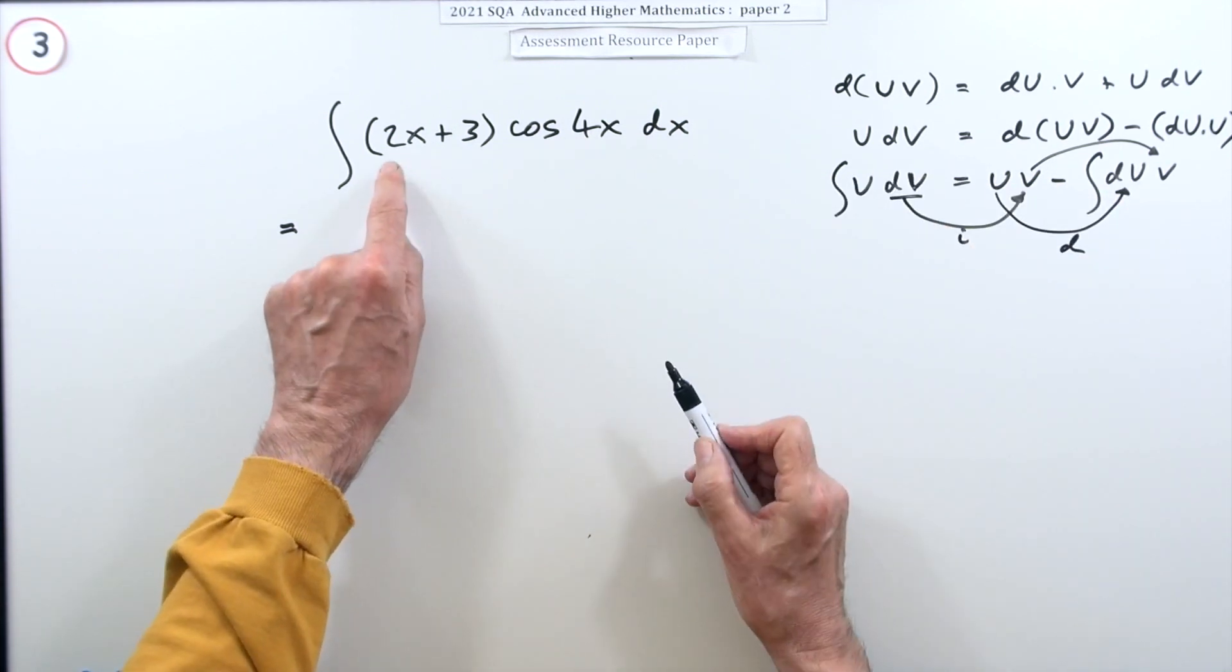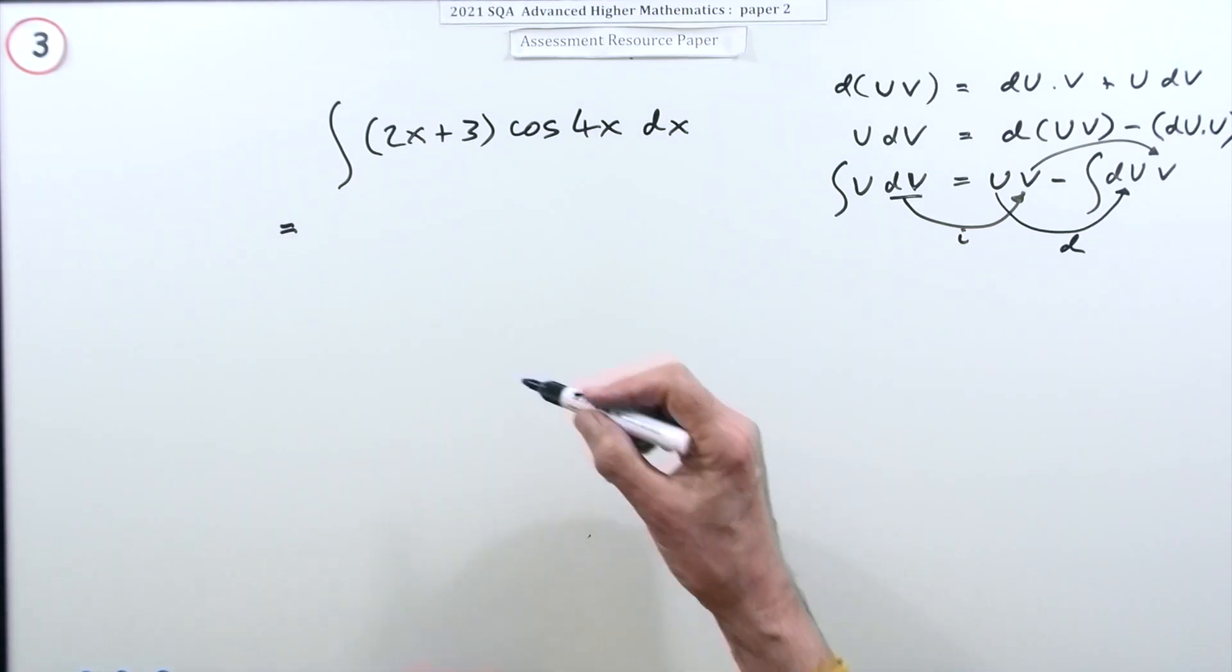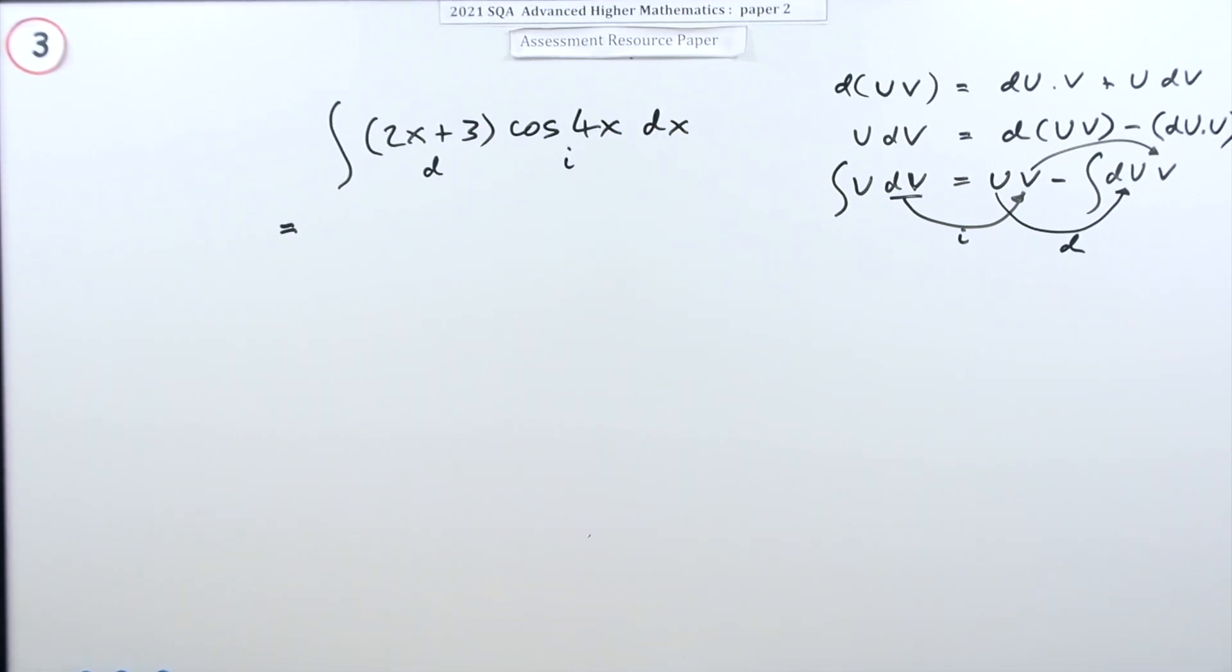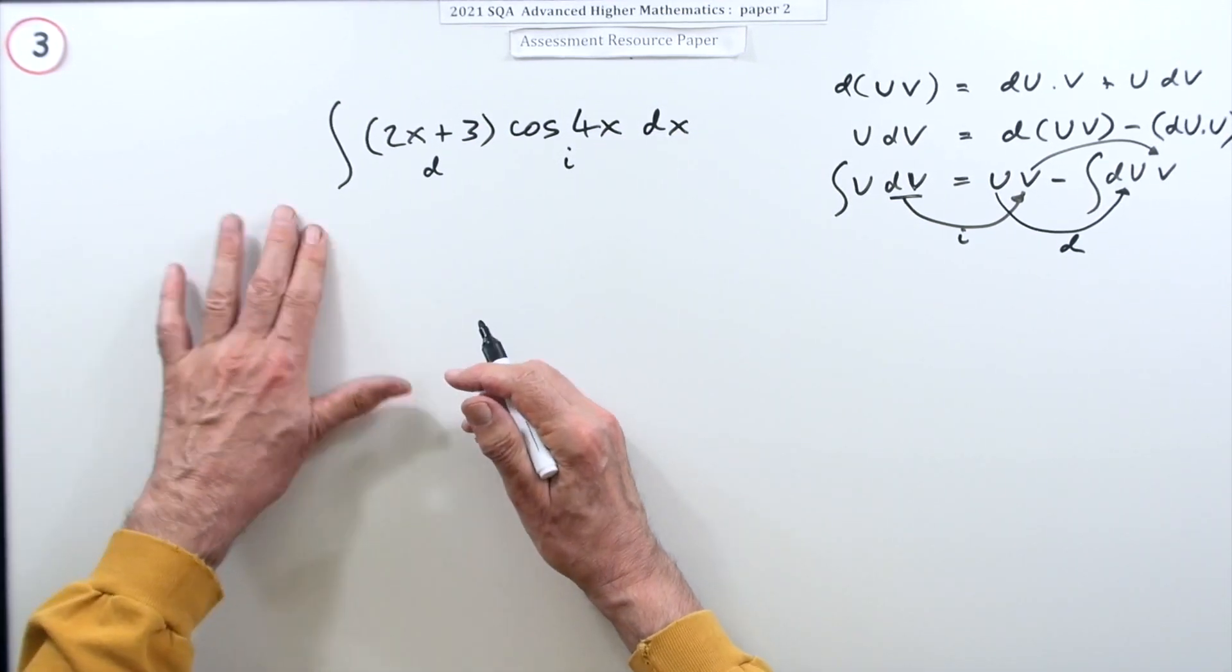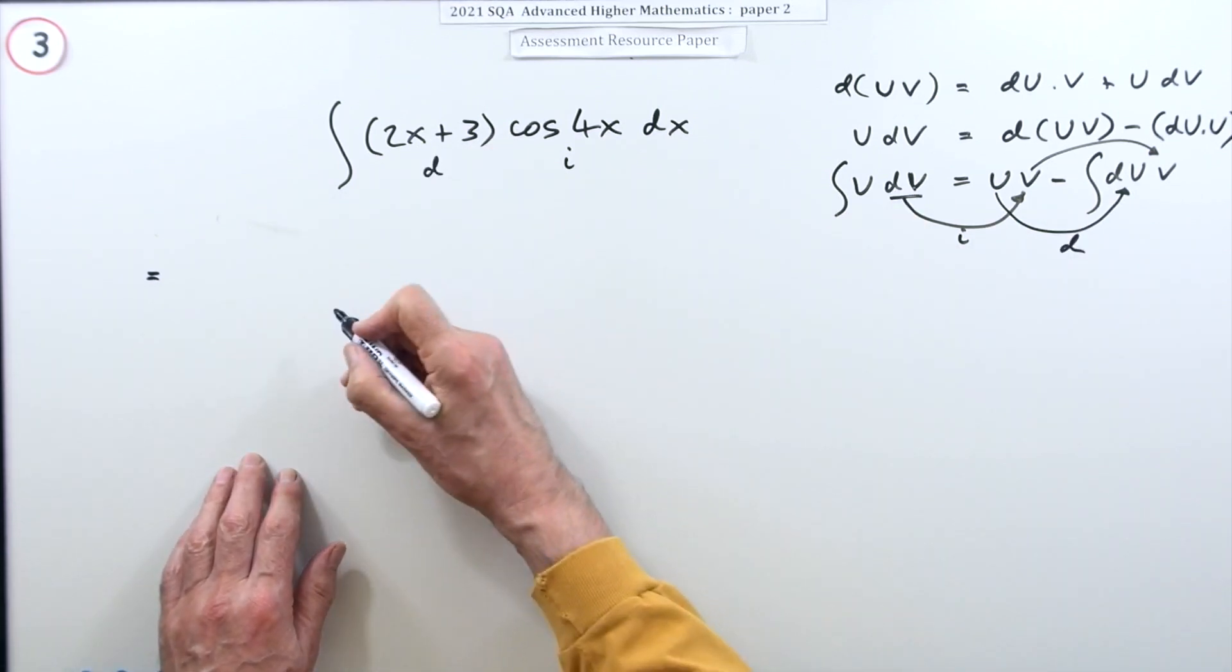And the whole point will be you're starting with an integral and you're ending up with another integral, and the whole point is you want that integral to be easier than that integral, or else you've gone nowhere. So the way to get this to be an easier one would be if you could whittle this down, if one of them could disappear almost. Well that would be this term. If that was the one to differentiate, it'll just go down to a 2. So that's my plan. I'm going to differentiate that and integrate that.